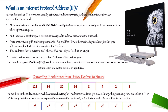There are two types of IP addressing standards: IPv4 (Internet Protocol version 4) and IPv6. IPv4 is the most widely used and familiar type of IP address, but IPv6 is in line to replace it in the future because we are exhausting IPv4 addresses. IPv4 has 4 bytes (32 bits), whereas IPv6 has 16 bytes (128 bits) in length. Dotted decimal notation separates each octet of the IP address with a decimal point.